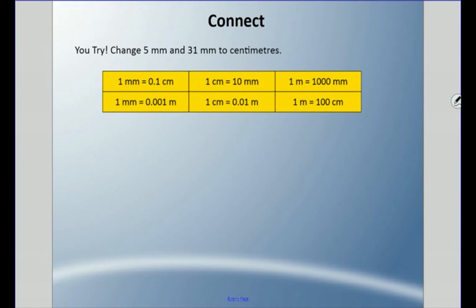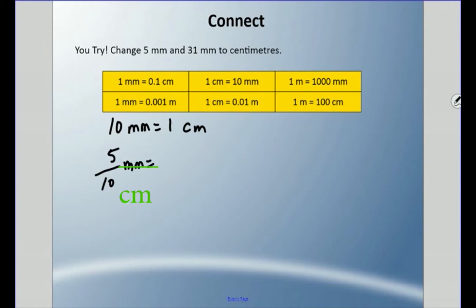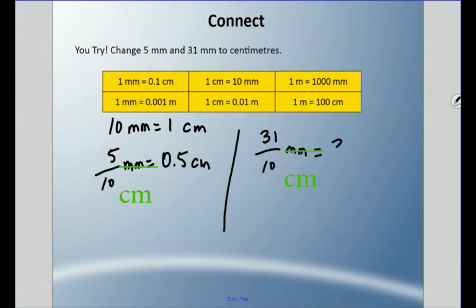Try these two: change five millimeters and thirty-one millimeters into centimeters. Pause it and come back. Remember, ten millimeters equals one centimeter. For five millimeters: five out of ten possible millimeters equals five tenths of a centimeter — 0.5 cm. For thirty-one millimeters: thirty-one tenths, which is thirty plus one, equals three and one tenth of a centimeter — 3.1 cm.